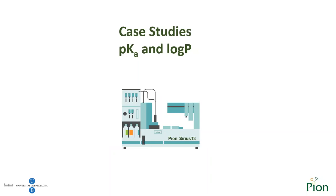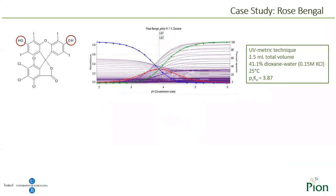Before I explain solubility, I would like to show you two case studies. The first one is Rose Bengal. We received this compound in our analytical service department for a pKa determination. Rose Bengal has two pKas predicted; however, when the UV-metric technique was used, only one pKa was measured from the UV data collected.